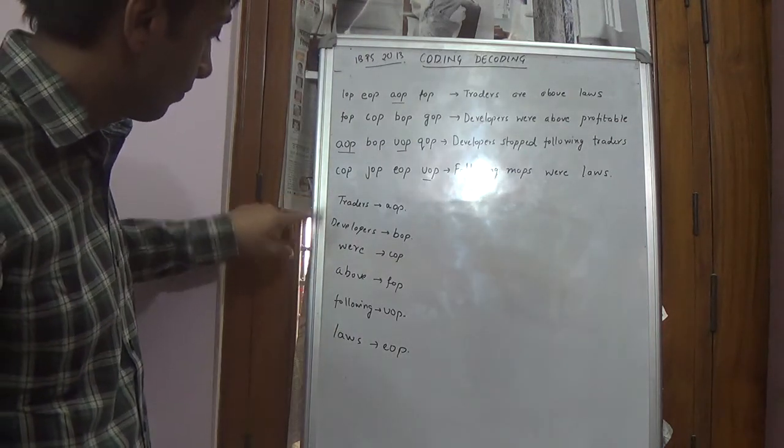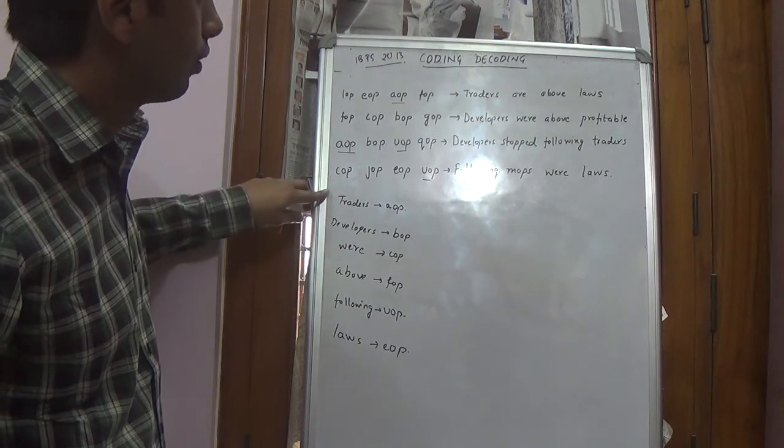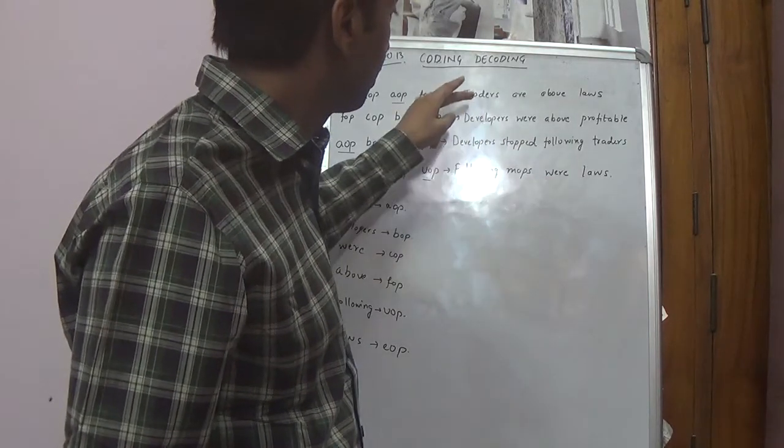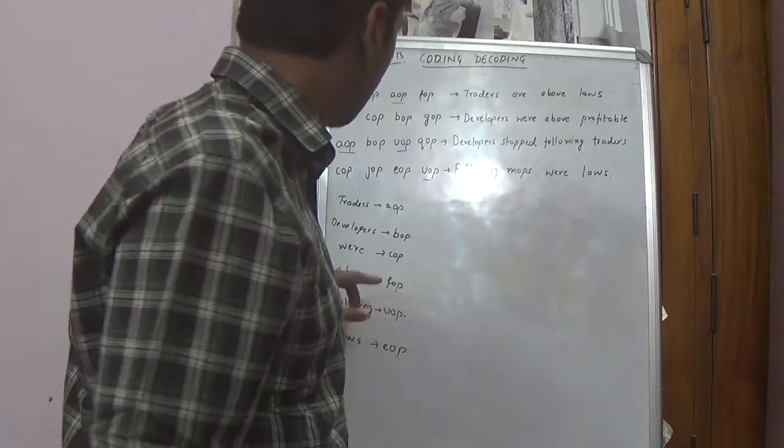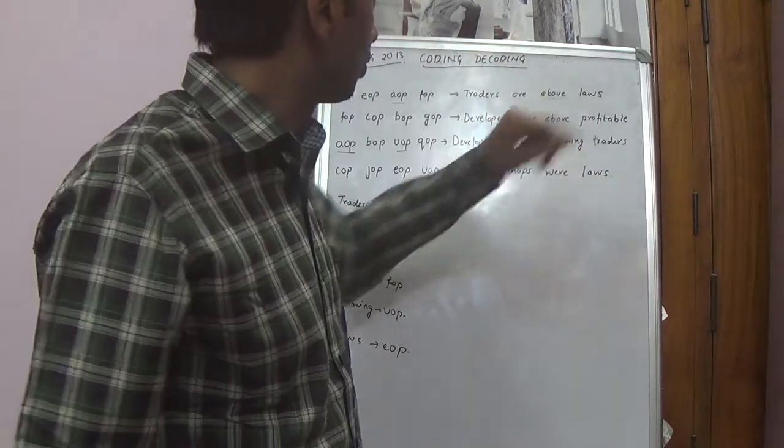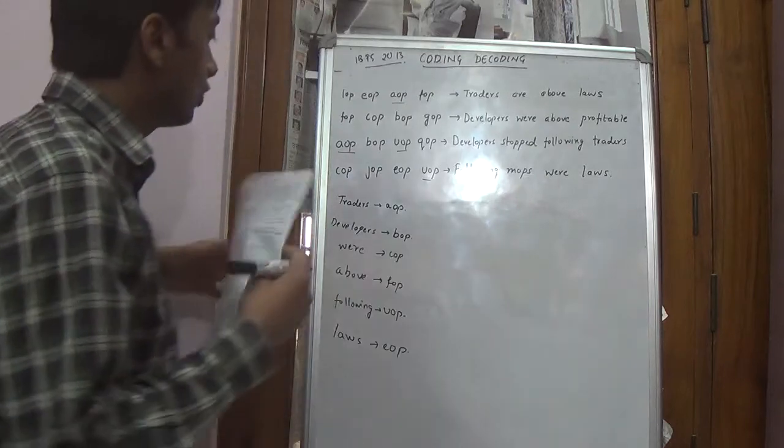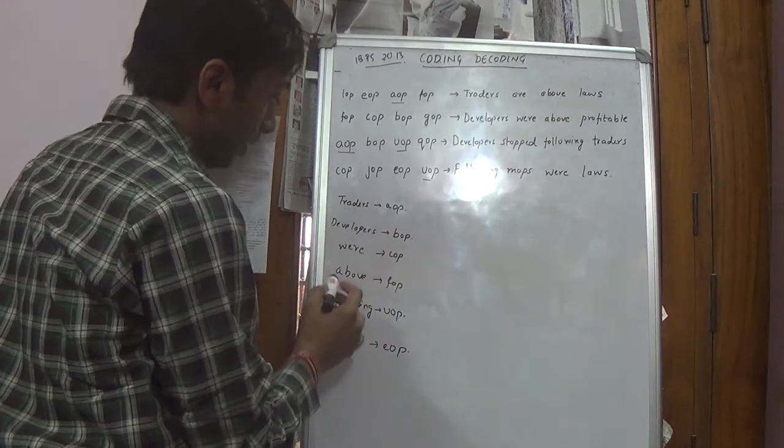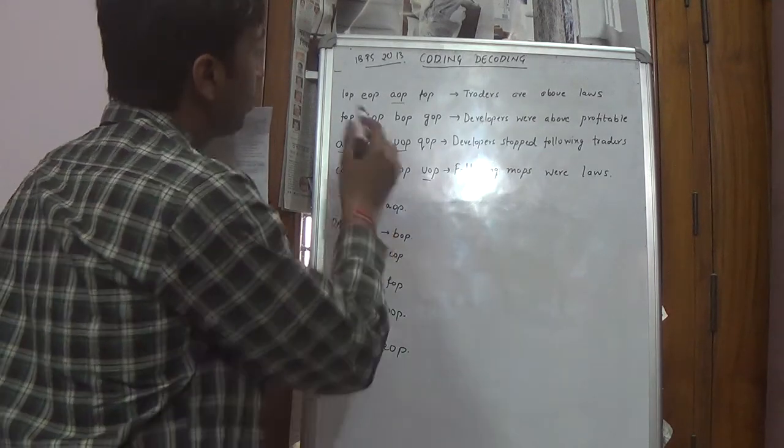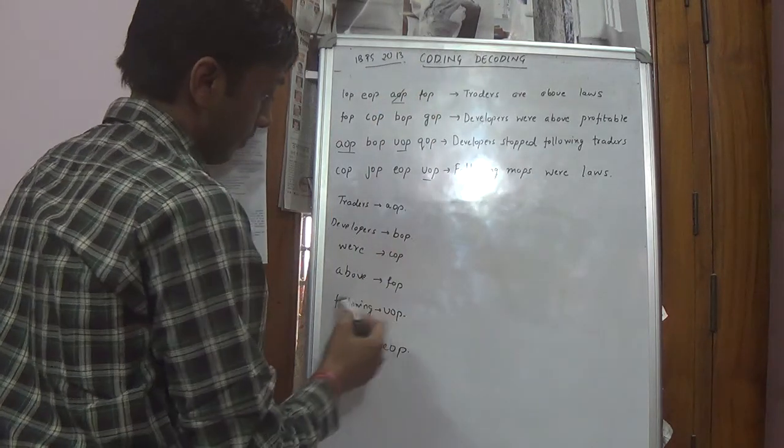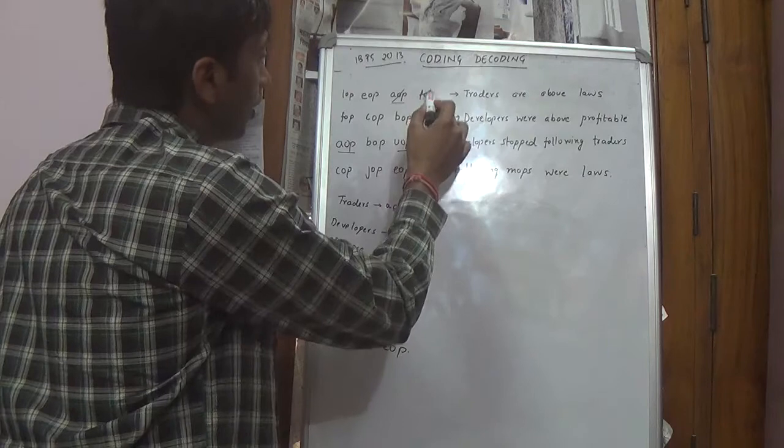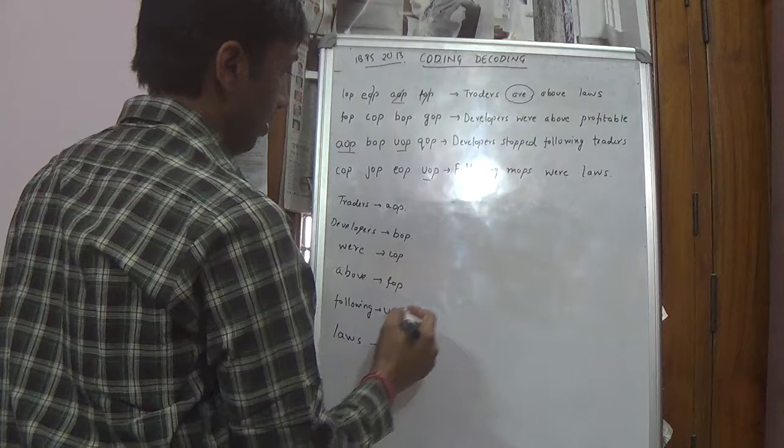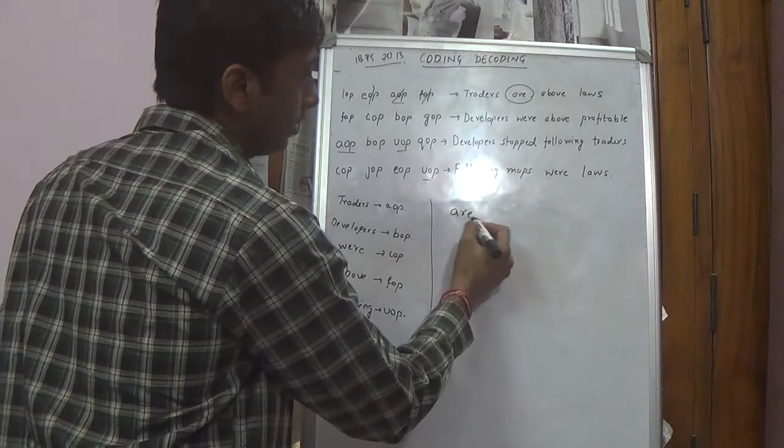Now we have got maps is only in this one. You cannot find out. Are is only in this sentence. Above we have found out. Profitable is only in this one. So now we check. Traders are above laws. Traders above and laws we have got. AOP we have got. Above FOP we have got. And laws EOP we have got. So are is LOP.